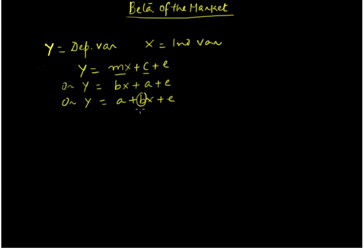Now this b here is our slope of the line, which we are going to call the beta. So if we want to write the beta for Y, we can say that this is going to be equal to the covariance between the two variables Y and X divided by the variance of X.